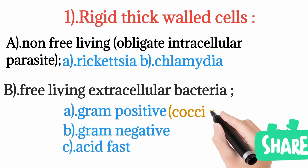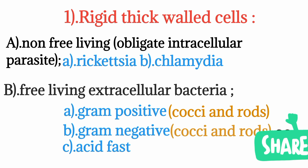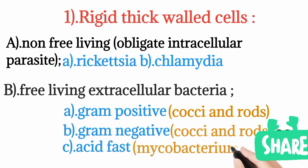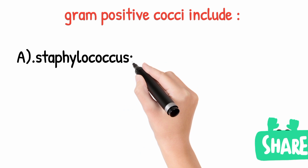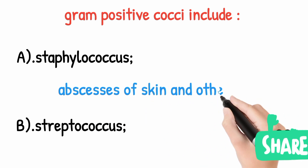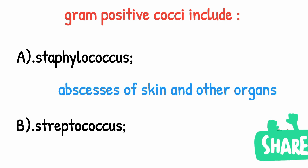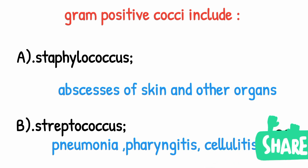Gram positive and gram negative organisms further have cocci and rods, which are circular and rod-shaped bacteria. The acid fast organism's best example is Mycobacterium tuberculosis, which causes TB in humans. Gram positive cocci include Staphylococcus and Streptococcus species. Staphylococcus is responsible for causing abscesses and pus in the skin and other organs, whereas Streptococcus causes pneumonia, pharyngitis, and cellulitis.